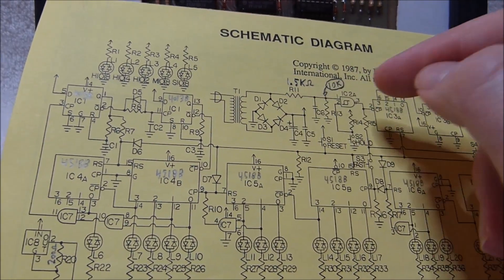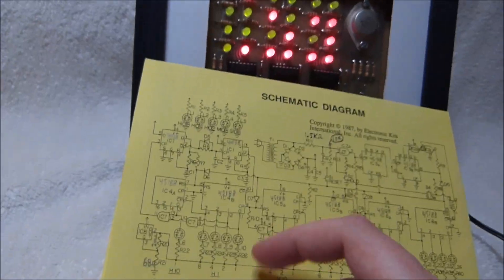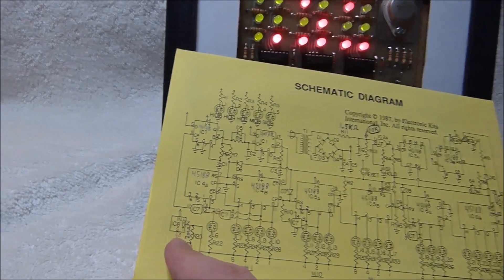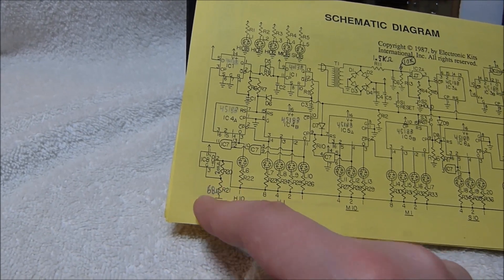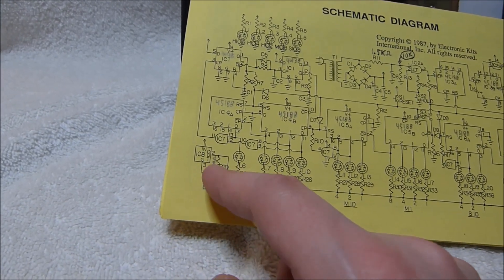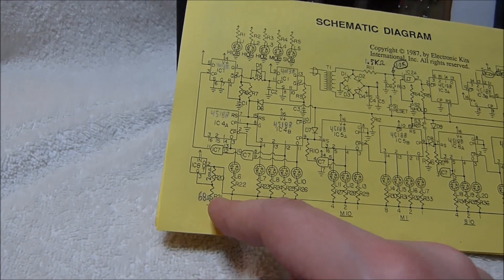Comes directly out of the bridge rectifier to this point here. And then, that's fed into this 5 volt regulator here with a 68 ohm resistance lifting it up from ground. And that puts out about 6 volts.